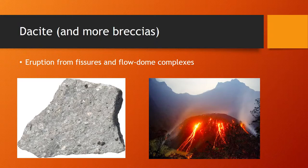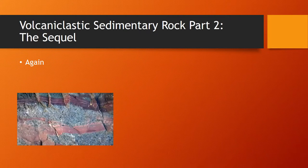Next came the formation of dacite and more breccias. These were formed by eruption from fissures and flow dome complexes. On this slide you can see a visual representation of dacite and another cool volcanic eruption.